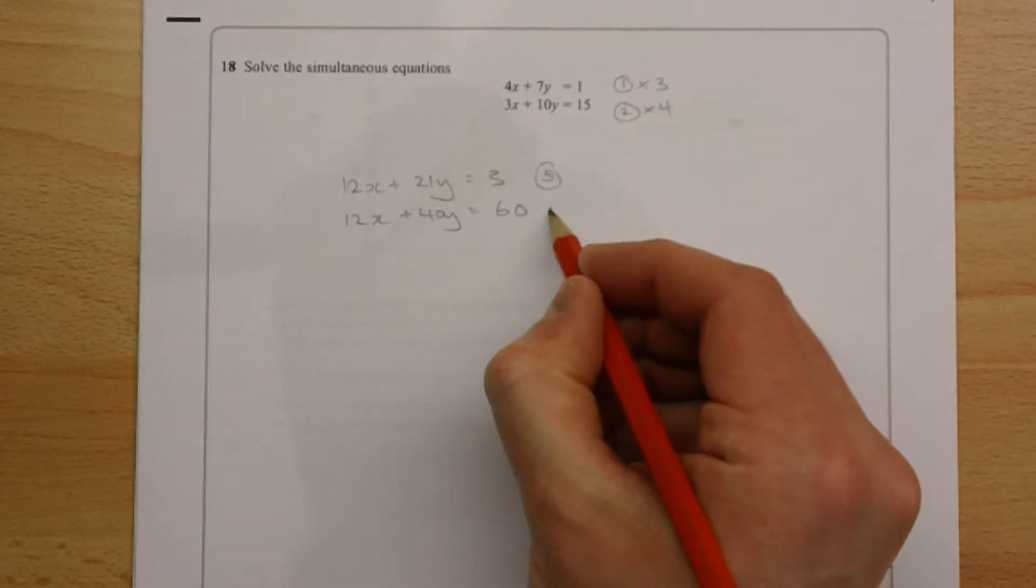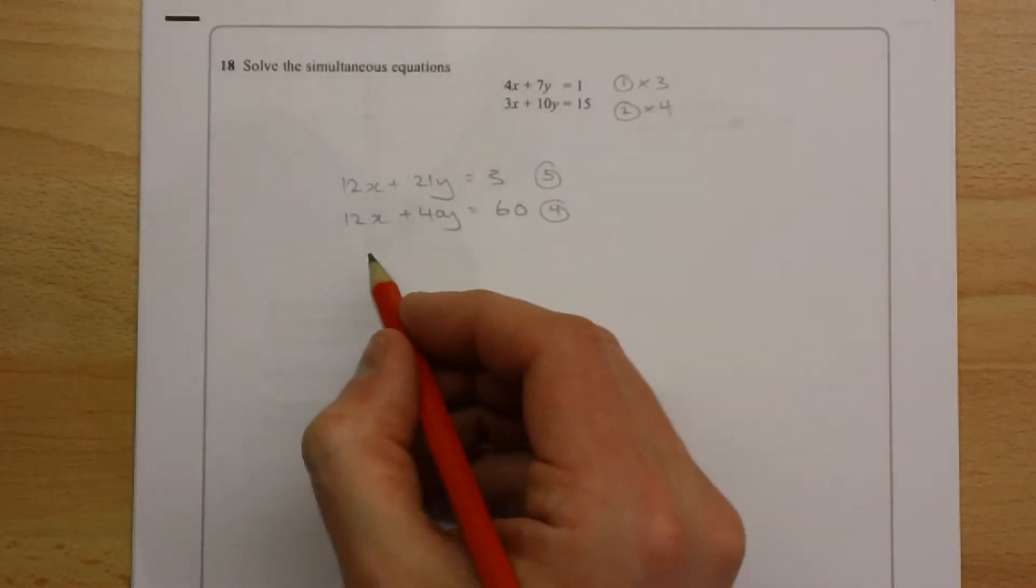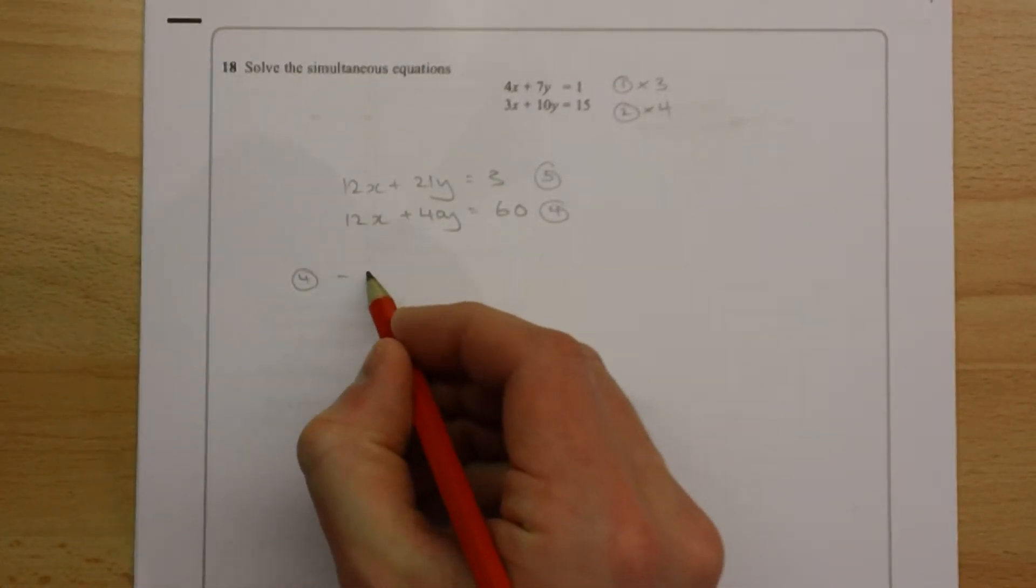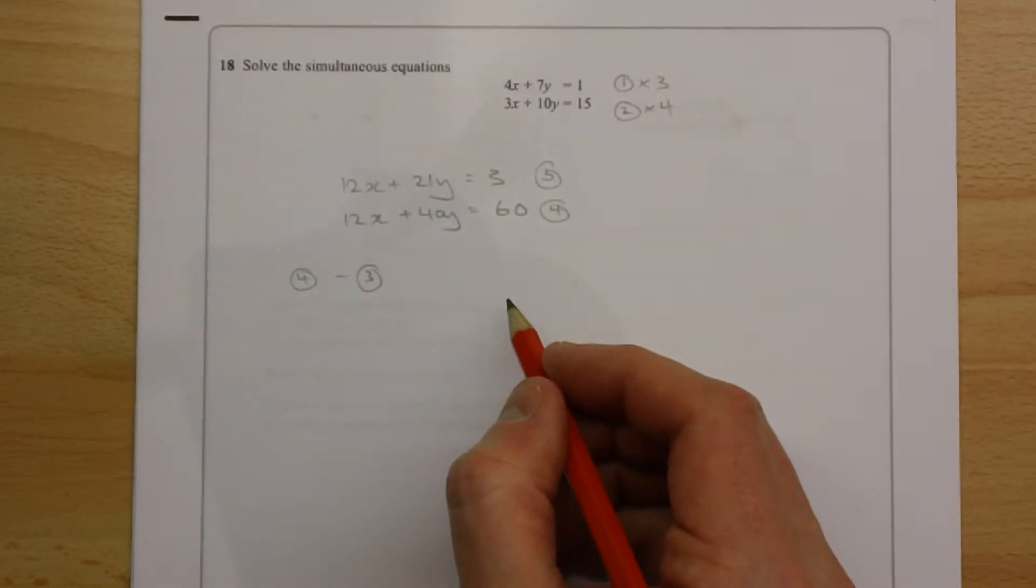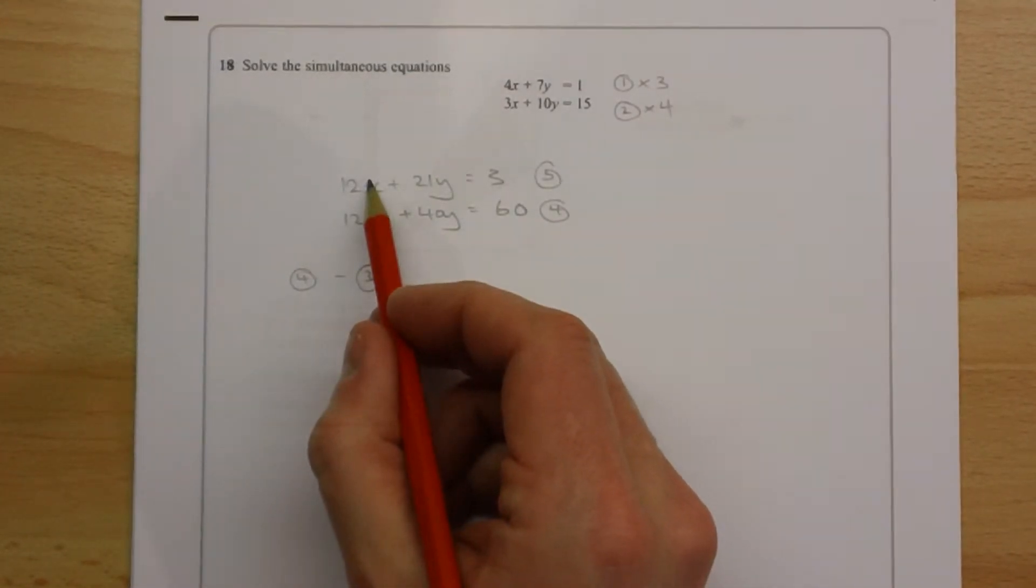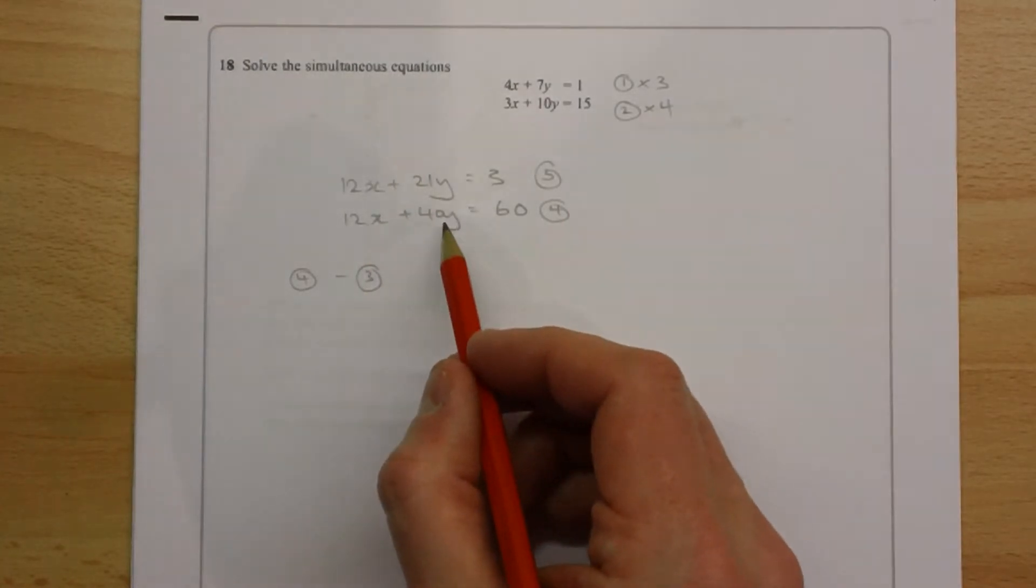I'll call this one 3 and this one 4. Now what I'm going to do is I'm going to subtract and I'm going to do 4 take away 3, just so that I'm not left with any negative terms. Now the 12x take away 12x is nothing, x's have disappeared.